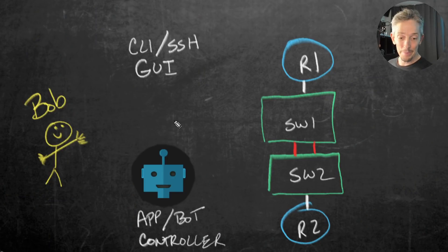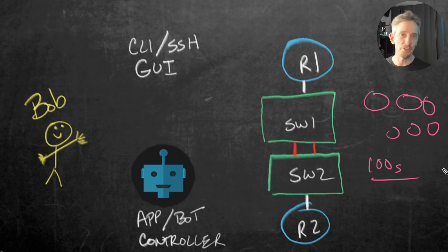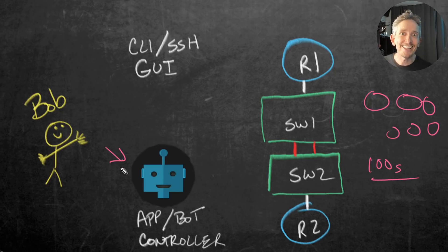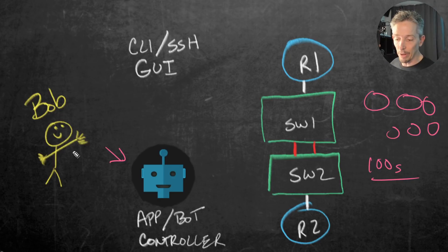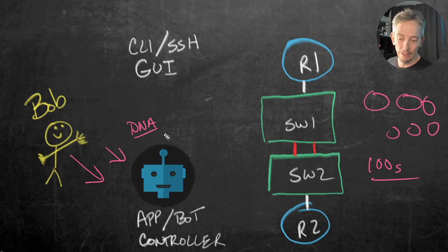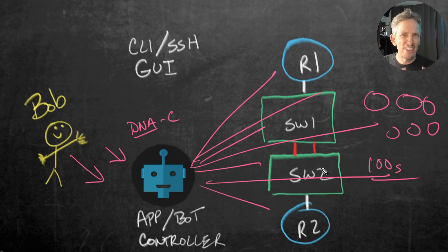Let's imagine Bob again, but now we have hundreds of devices to manage. Instead of Bob trying to manage those all independently, we could have some type of a bot, a robot, like a controller — some piece of software able to communicate with all those devices, check on things in just a split second, and make changes if needed. In Cisco, we have the DNA Center as an example of a controller. The controller could communicate with all the hundreds or thousands of devices and make very quick queries and decisions.